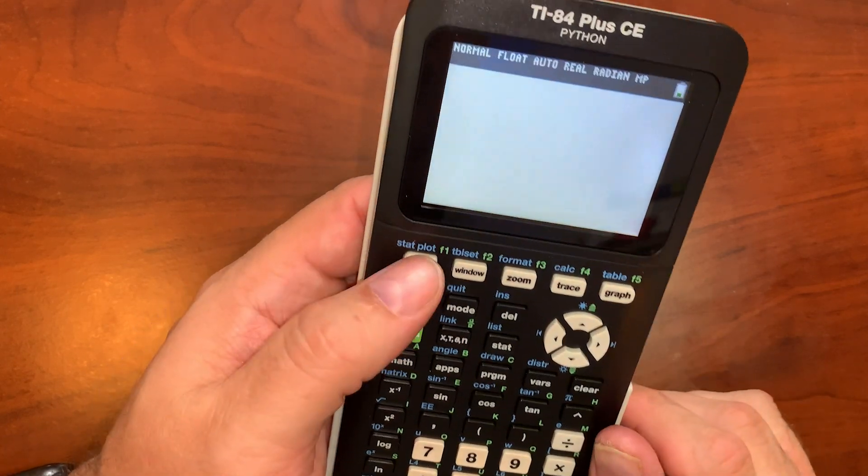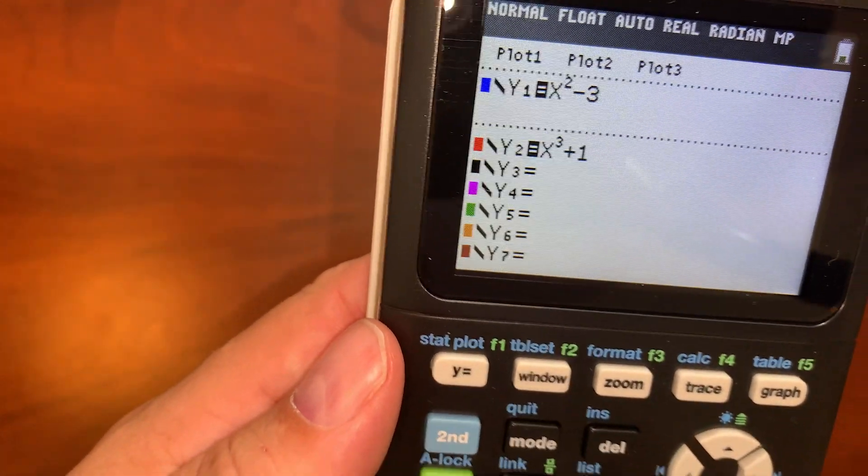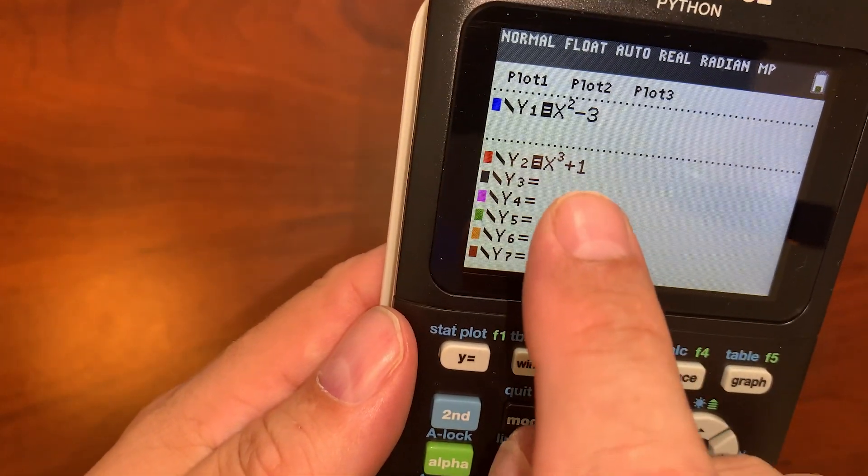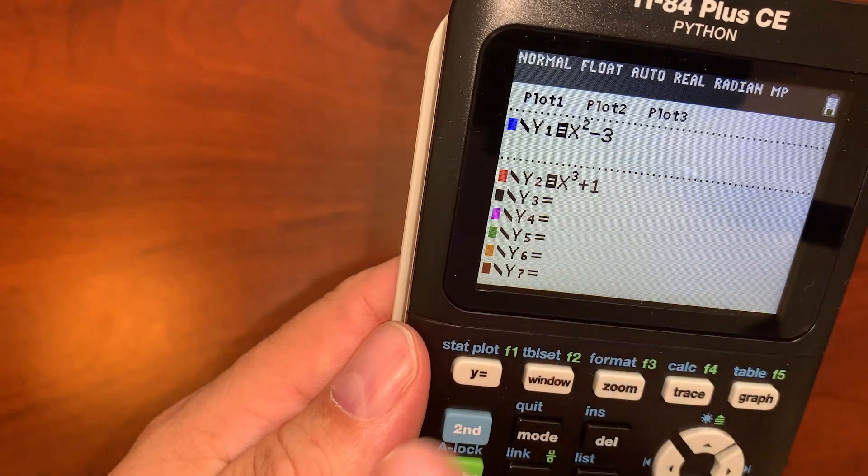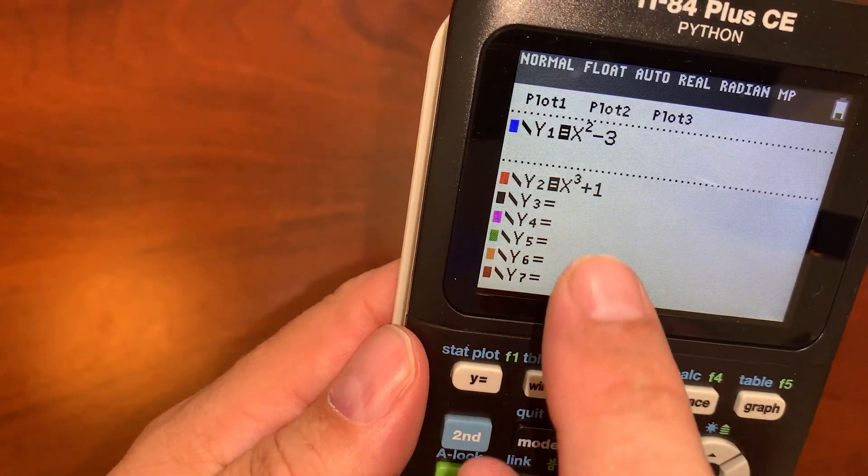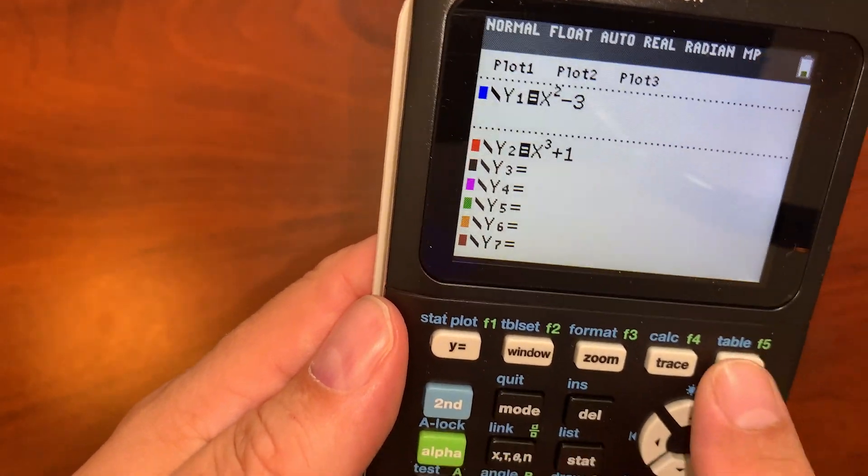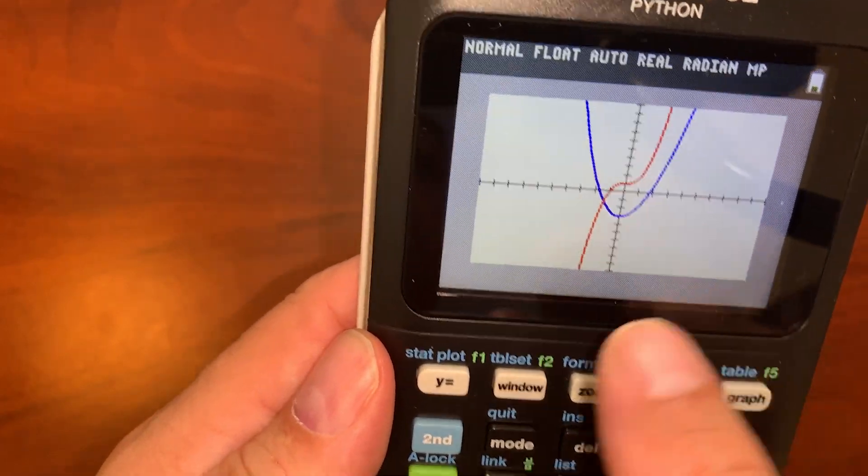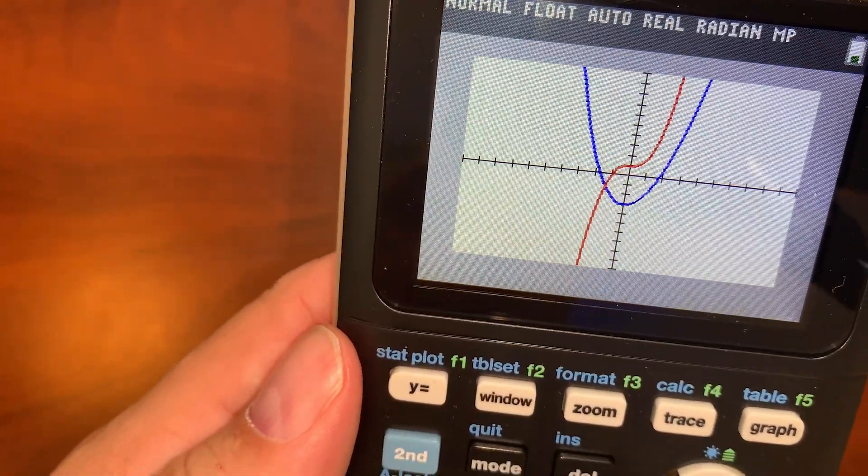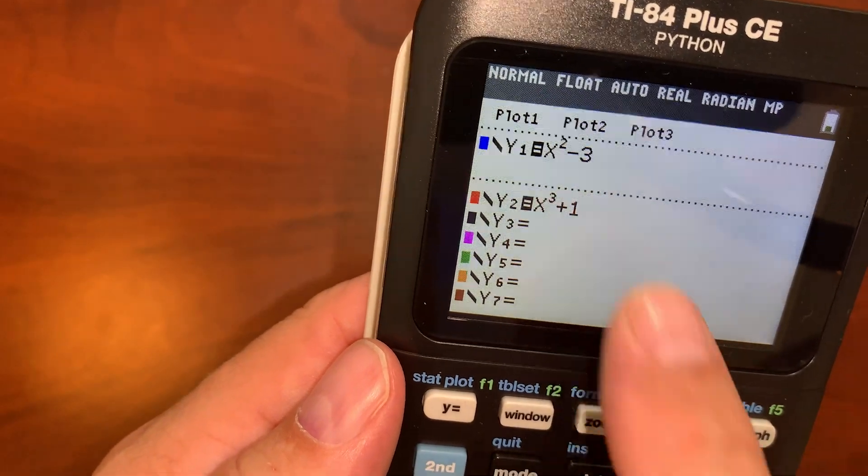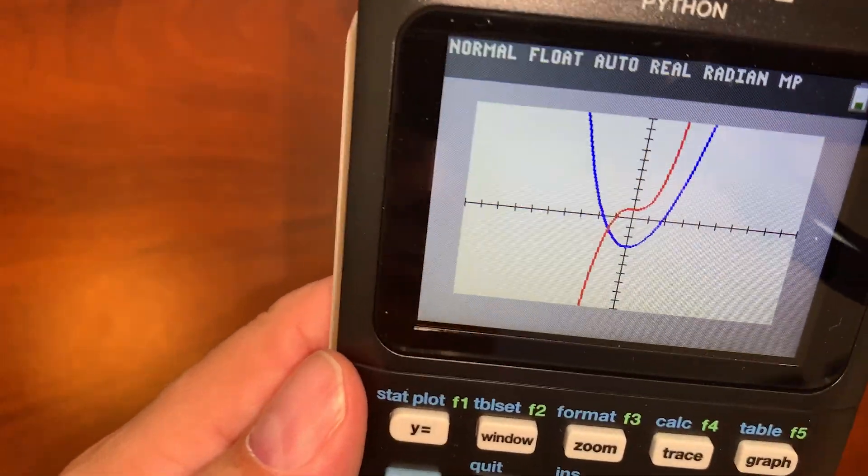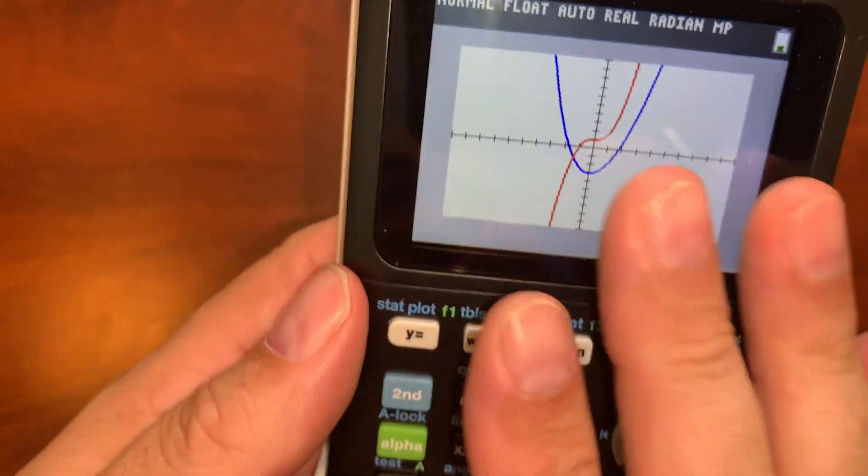To do that, we'll go straight in here and you can see I have a function in here already. I have x squared minus three and x cubed plus one. If I graph that, you can see those graphs are right there. If I go back to this screen, you'd see the blue is the first one and the red is the second one.